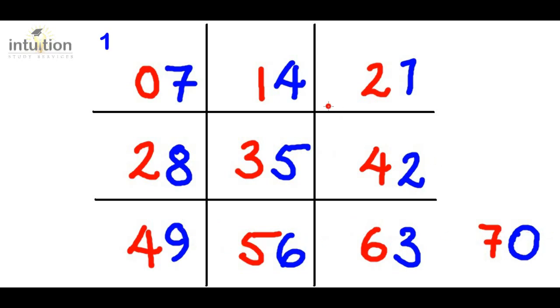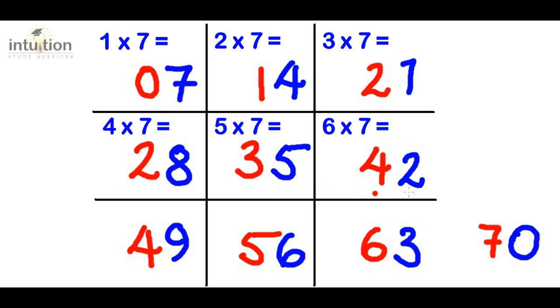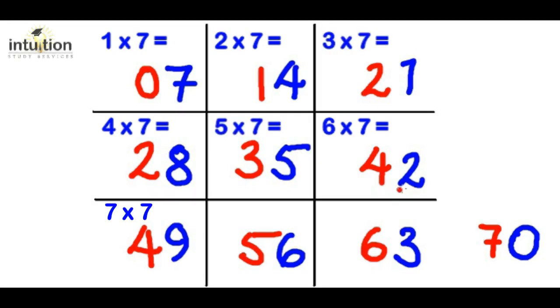So, we've got 1 times 7 is 7. We've got 2 times 7 is 14. 3 times 7 is 21. 4 times 7 is 28. 5 times 7 is 35. 6 times 7 is 42. 7 times 7 is 49. 8 times 7 is 56. 9 times 7 is 63. And finally, 10 times 7 is 70. And if you write this out a few times, you'll know it in a matter of seconds.